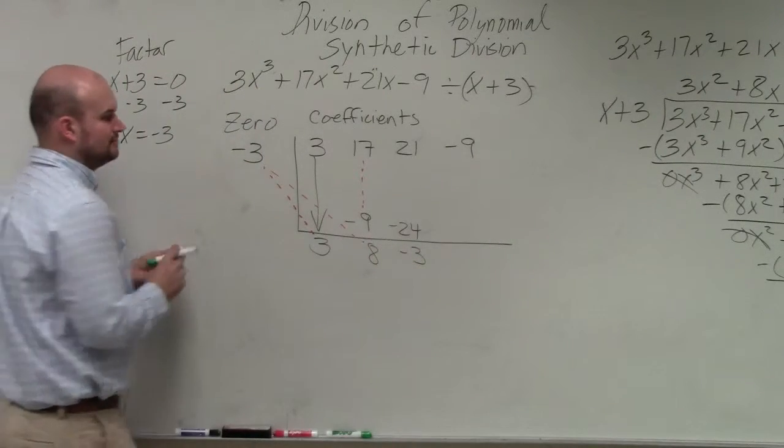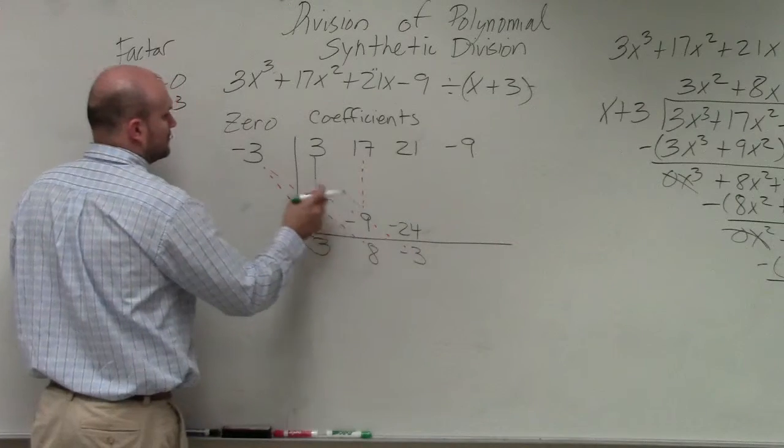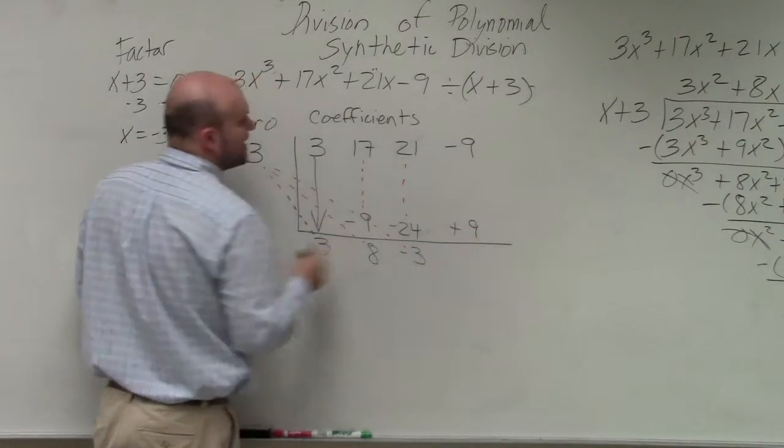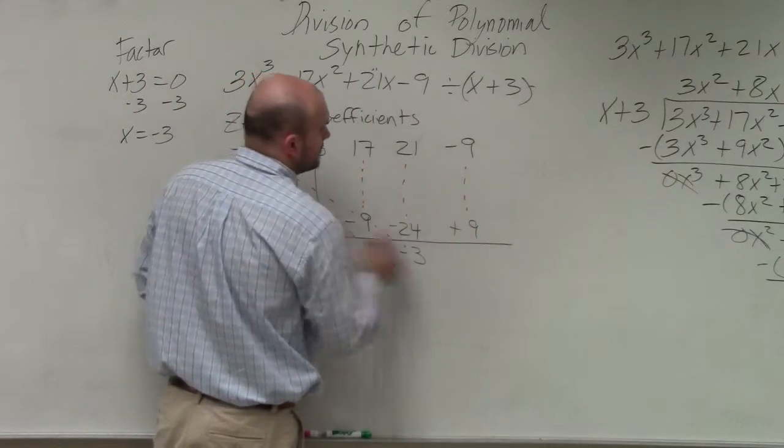Negative 3 times negative 3? Positive 9. Negative 9 plus positive 9? Zero.